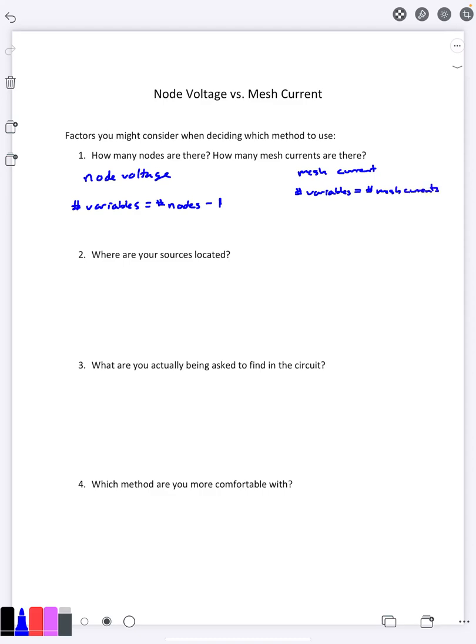I'm ignoring the whole dependent source extra equations because that's the same no matter which technique you use. So if you have a problem here with a lot of nodes but only a few meshes, you probably want to use mesh current. If you have only a few nodes and a lot of meshes, you probably want to use node voltage.